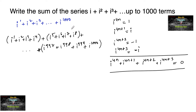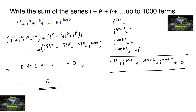Since 1000 is divisible by 4, we get exactly 250 such groups, each summing to zero. So i¹ + i² + i³ + i⁴ = 0, i⁵ + i⁶ + i⁷ + i⁸ = 0, and so on. The total sum is 250 times zero, so the answer is zero.